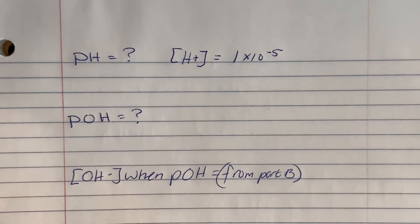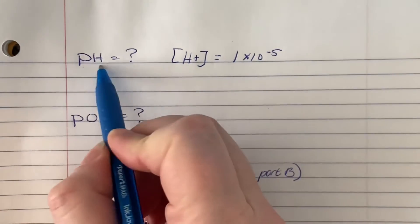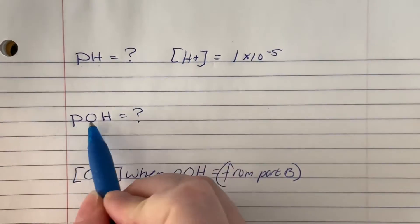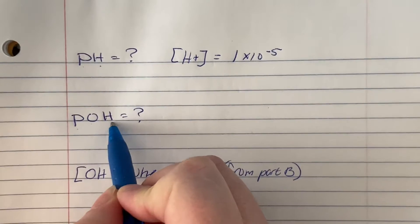So this chapter is about acids and bases, and so we have pHs. pH is how acidic something is. pOH is how basic something is.